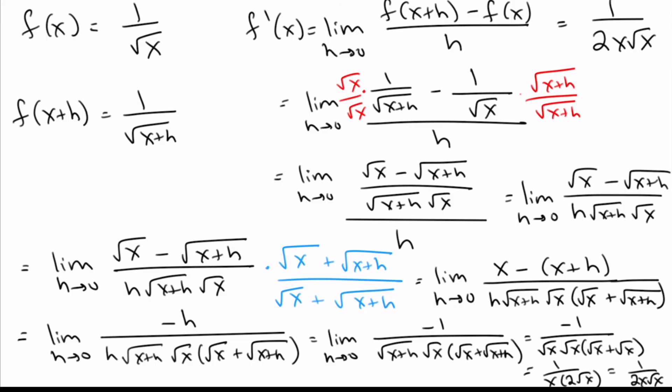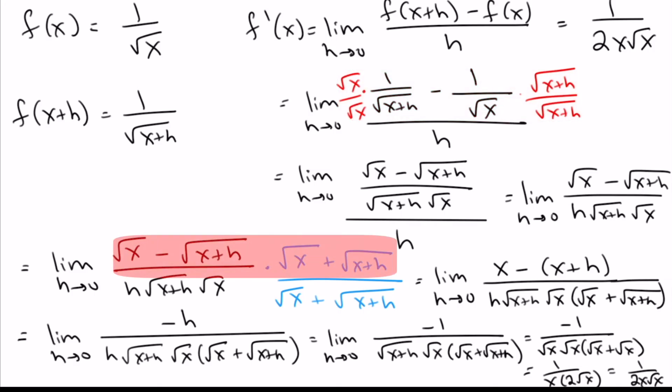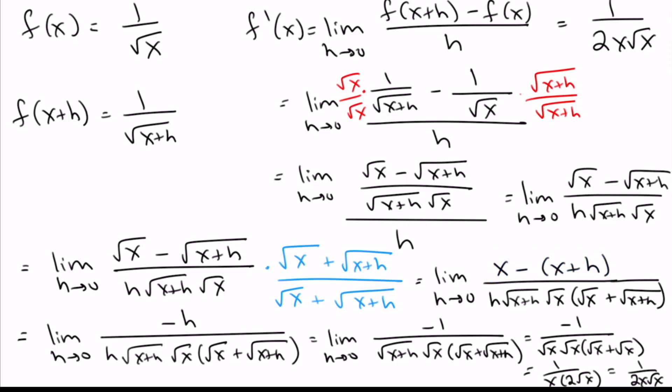That was one that had a lot of algebra to it. But really the main trick was two steps: one, getting the common denominators early on so we could actually subtract those two fractions; and two, multiplying by the conjugate, which let us get rid of those square roots on top.